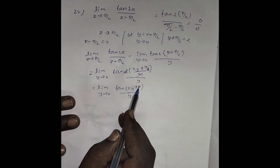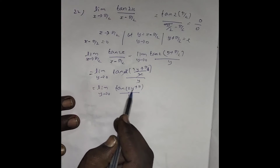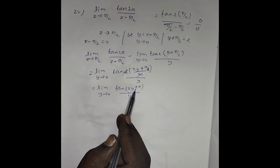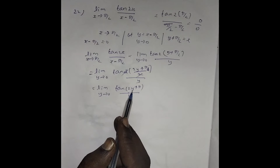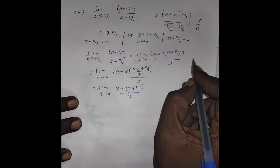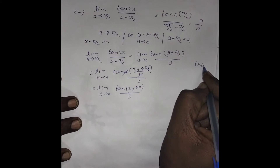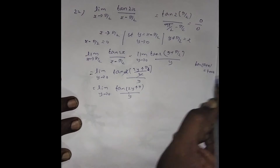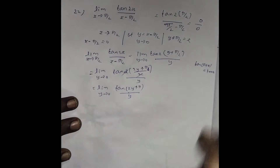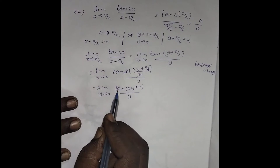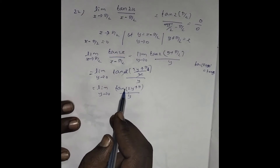Now, π is 180°, so (2y + π) means 180° + 2y, which lies in the third quadrant. In the third quadrant, tan is positive. Using the identity tan(π + θ) = tan(θ), and substituting θ = 2y, we get tan(π + 2y) = tan(2y).